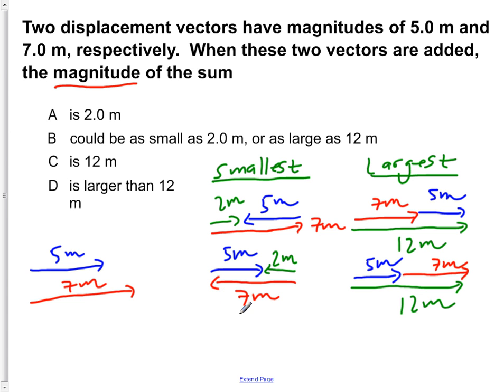So knowing that, if instead one of them was oriented at some odd direction, say we had 7 meters to the east, and then we had our 5 meters oriented off to some direction.